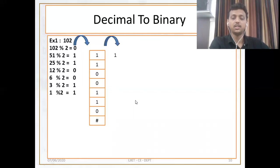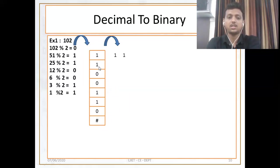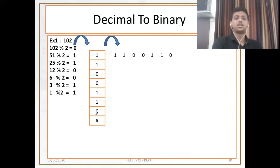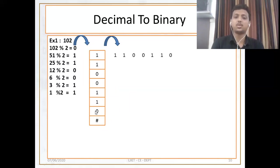First one is 1, next again 1, next is 0, next 0, next 1, next 1, next 0. So this is my answer: 1 1 0 0 1 1 0.